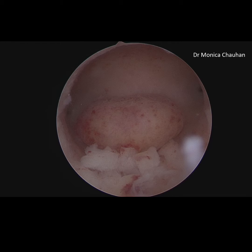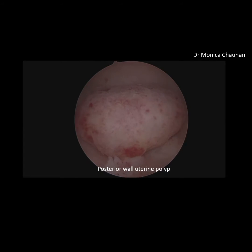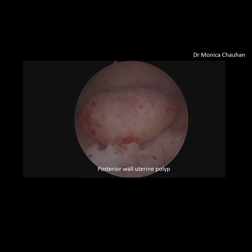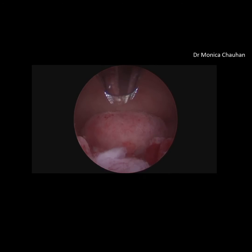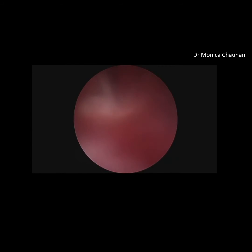Hysteroscopy is a very minimally invasive approach, as we approach from the vaginal end. I'm sharing a very short video on removal of a posterior wall uterine polyp using a soft tissue mechanical morcellator. The advantage of using this method is as follows.